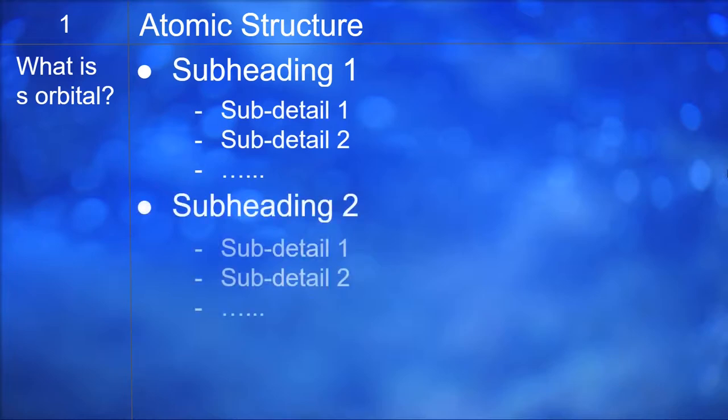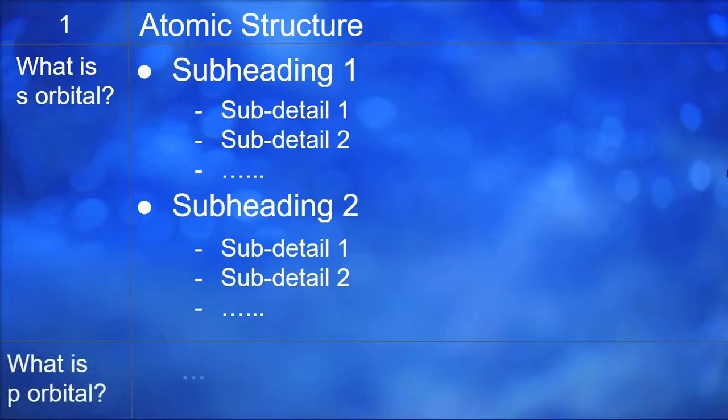Now this is an example. So you put, for example, chapter one is atomic structure and you ask your first question: what is s orbital? Indicates subheading one, then the sub details, subheading two, the sub details. So the subheading one could be like shape, subheading two could be direction. And then before you go to the next question you insert a small line or a border and then you go to the next question like what is the peer orbital, and then you just do the same thing again.